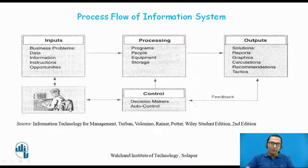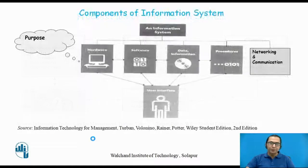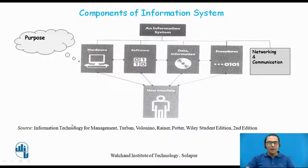There can be two types of information system: one in which human intervention may be required, and one in which human intervention may not be required. Depending upon what kind of business problem we are solving, there can be human intervention or there cannot be. Once we understand the process flow of a typical information system, the next part is what are the different components or building blocks of the information system.